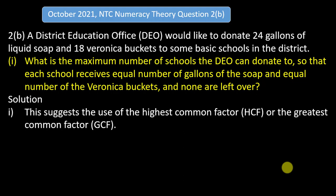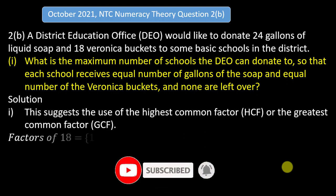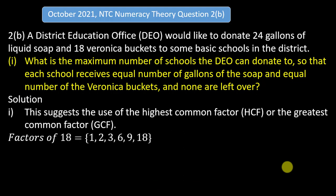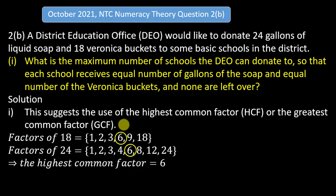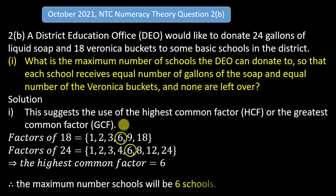We shall use the listing method. First, we list the factors of 18: 1, 2, 3, 6, 9, and 18. Then we list the factors of 24: 1, 2, 3, 4, 6, 8, 12, and 24. When you compare the two sets, the highest number common to both is 6. Therefore, the highest common factor is 6.